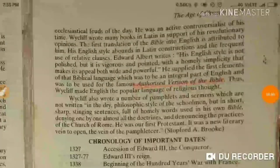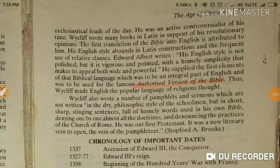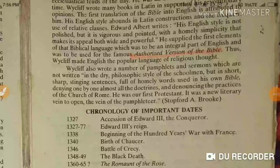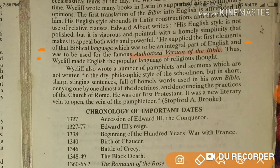Wycliffe was connected to religious matters and feuds, and he is the first person who translated the Bible — remember this. He supplied the first element of the biblical language that was to become an integral part of English, used in the famous Authorised Version of the Bible. Wycliffe made English the popular language of religious thought.